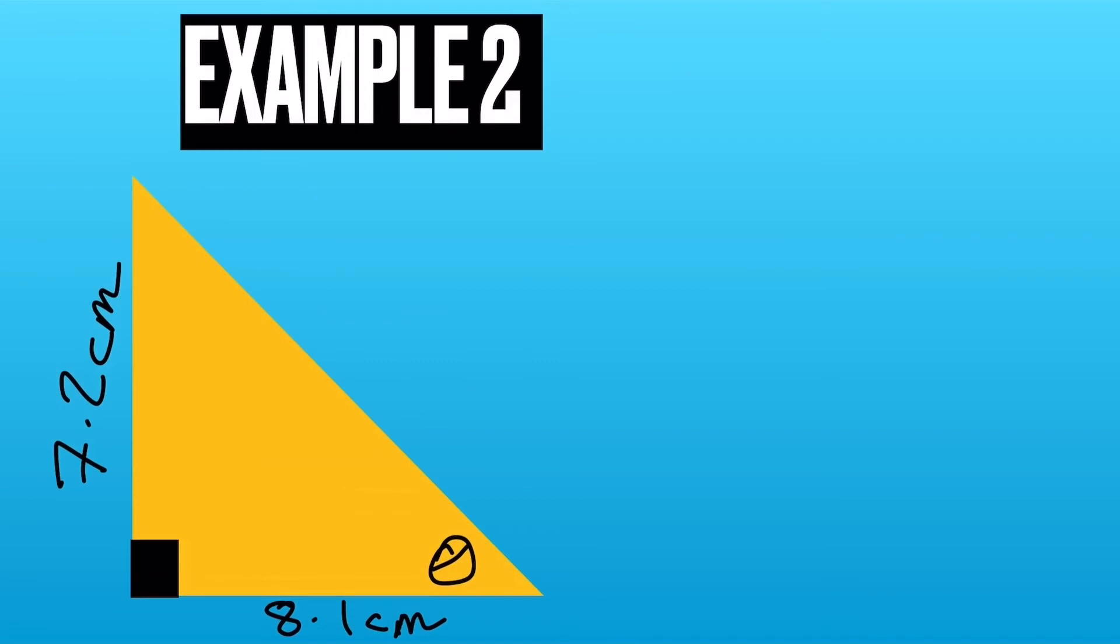Example 2. This time the opposite side is 7.2. The hypotenuse is always opposite the right angle. And we have also the adjacent side. So we've got opposite and adjacent, so it's tan theta.